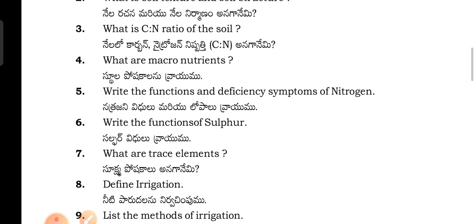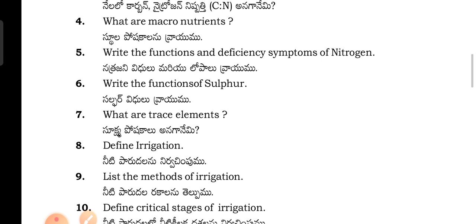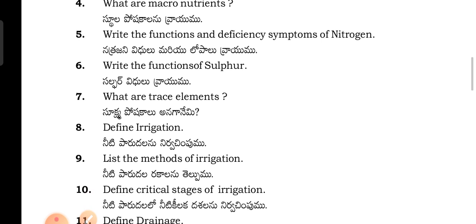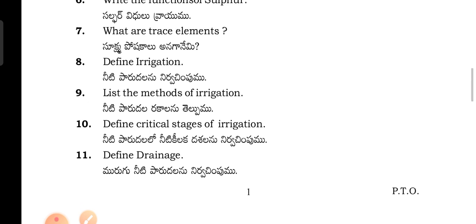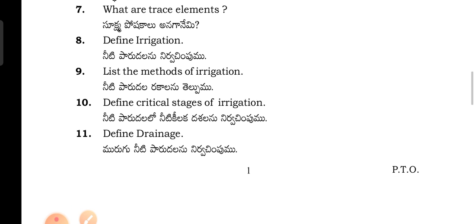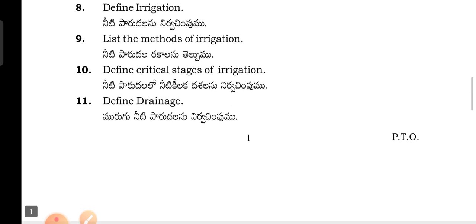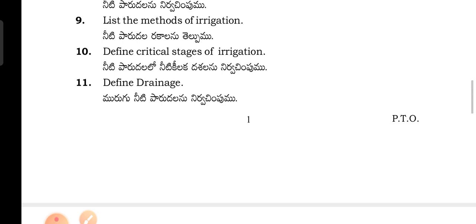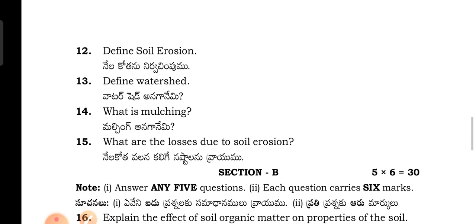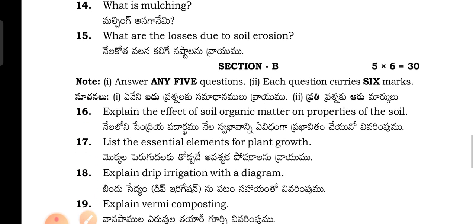What are micronutrients and macronutrients? Micronutrients are nutrients required in smaller amounts, while macronutrients are nutrients required in larger amounts. Define soil erosion. Define watershed. What is mulching? What are the losses due to soil erosion?